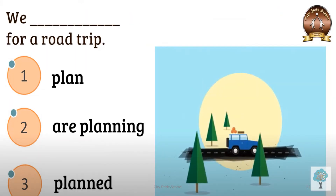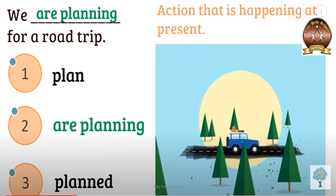Now carefully look at the next picture. The sentence is: 'We dash for a road trip.' The options given are: plan, are planning, and planned. Think — what is the rule of present continuous tense? And accordingly complete the sentence. That's great, you answered it correctly! 'We are planning for a road trip.' We used 'are' because 'we' is a plural pronoun. The main verb is 'plan' with ing form, and this action is happening at present.